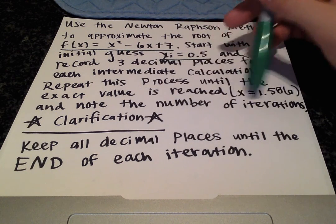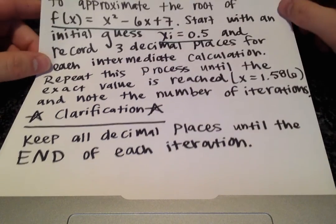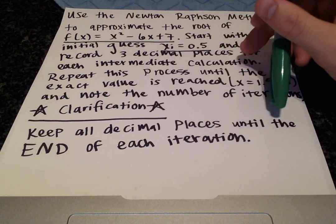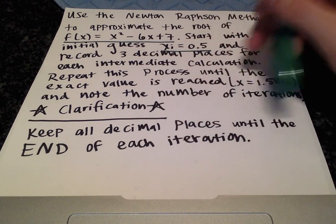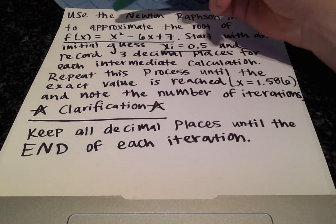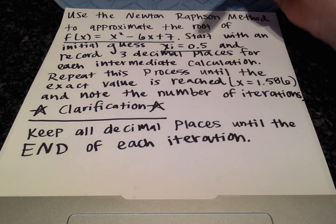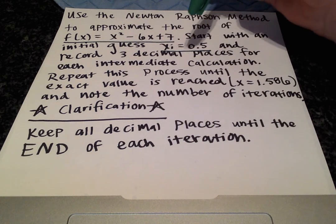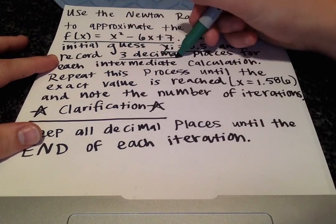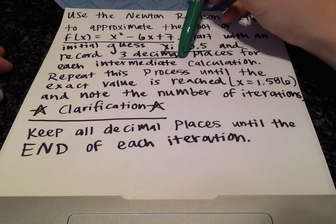And we want to note the number of iterations. And we also have a little clarification here, which tells us to keep all decimal places until the end of each iteration. So when we are plugging in our x values, for the function or for the derivative, we're going to keep all the decimal places and we're going to cut it off. We're going to cut off the decimal places and record three whenever we get to the end of each iteration.